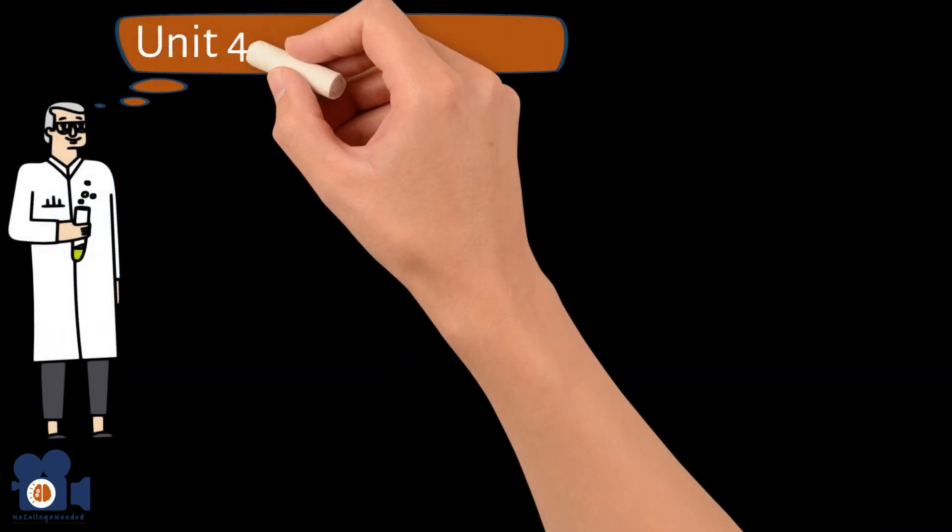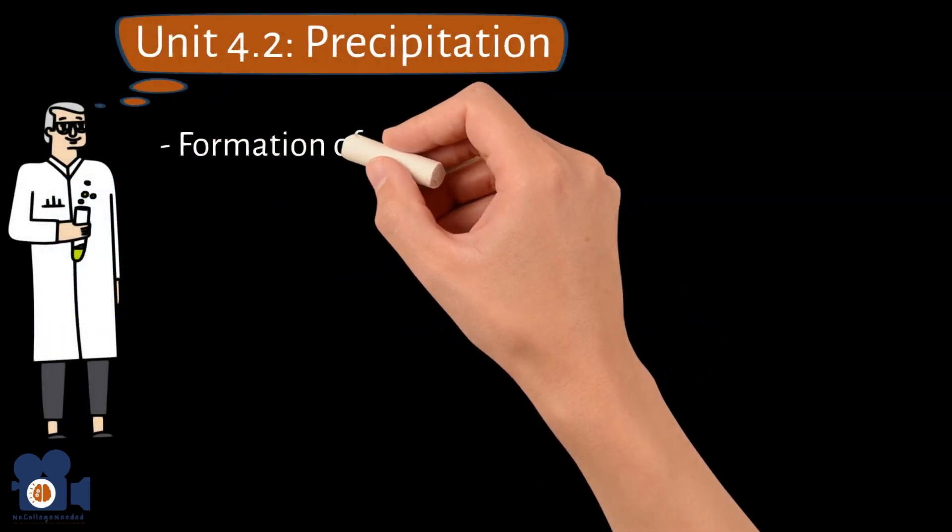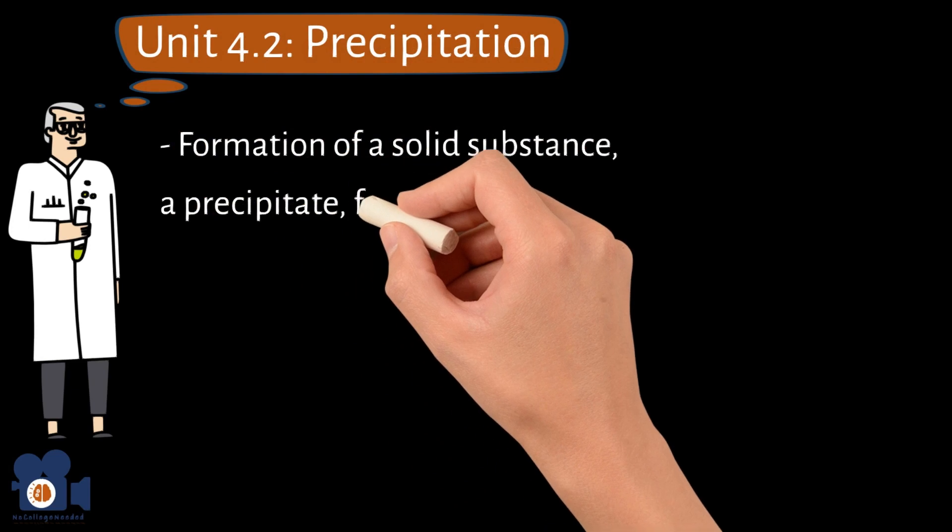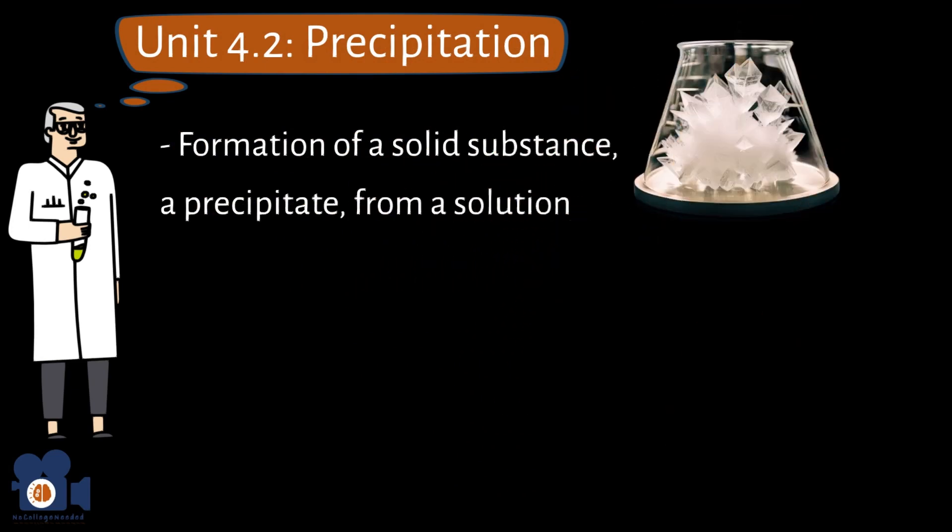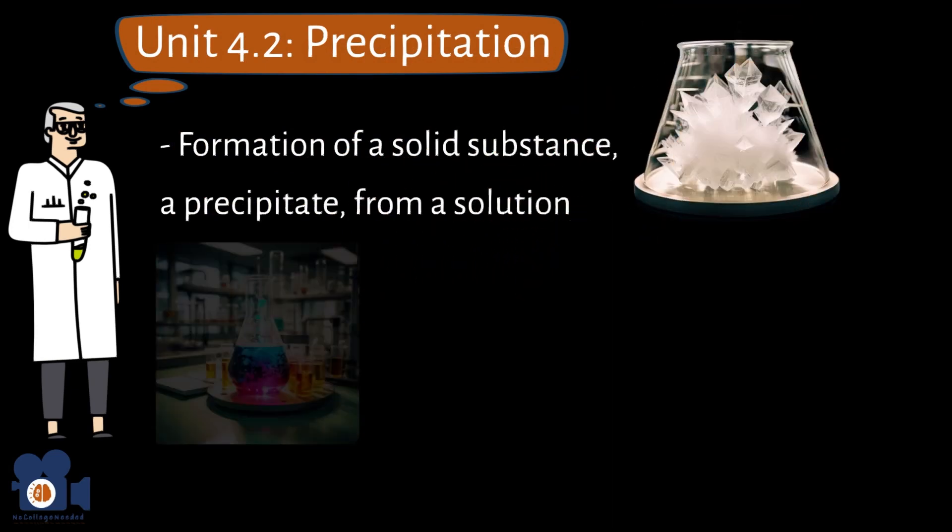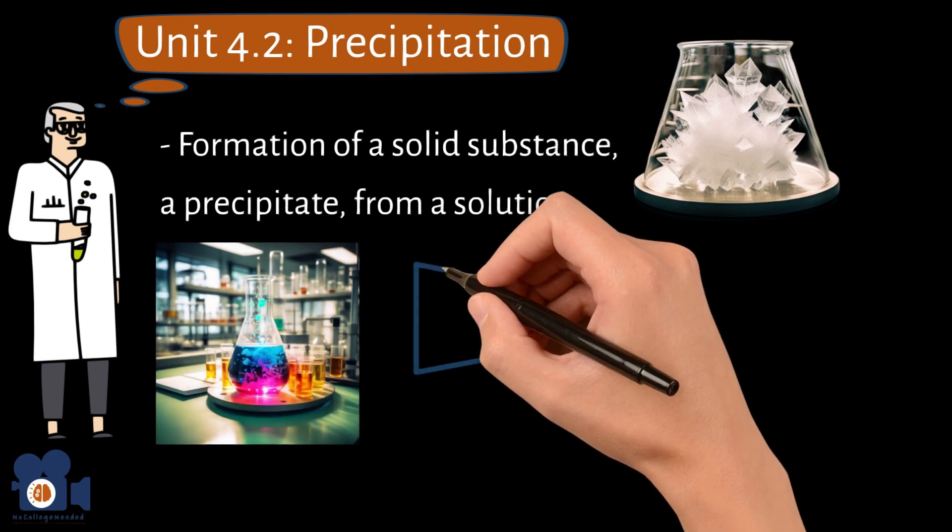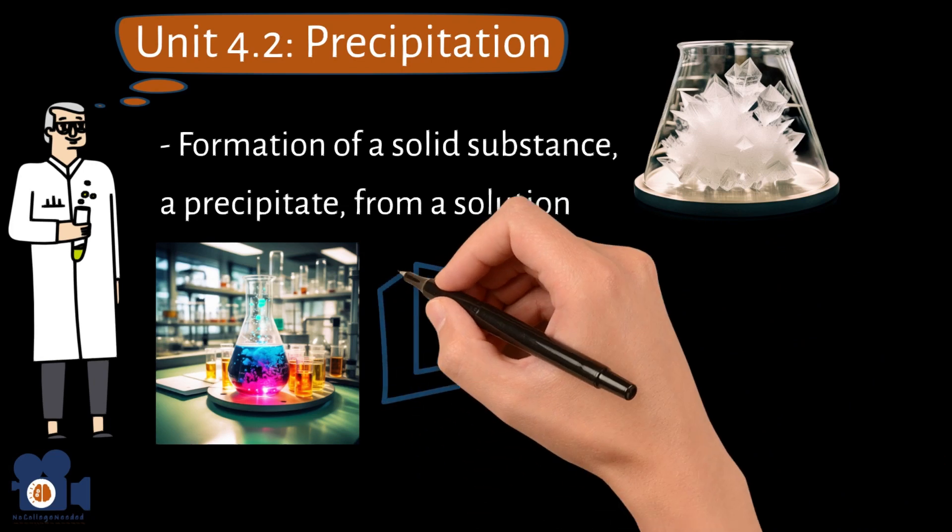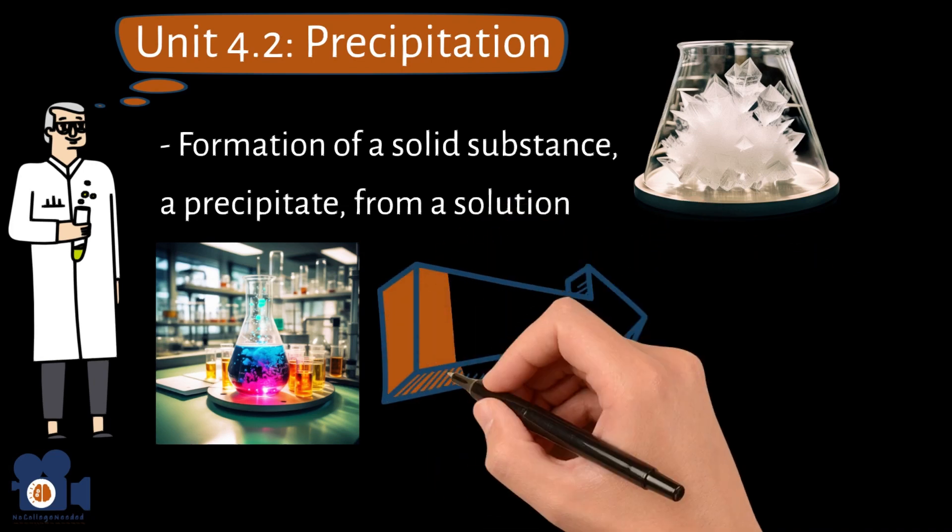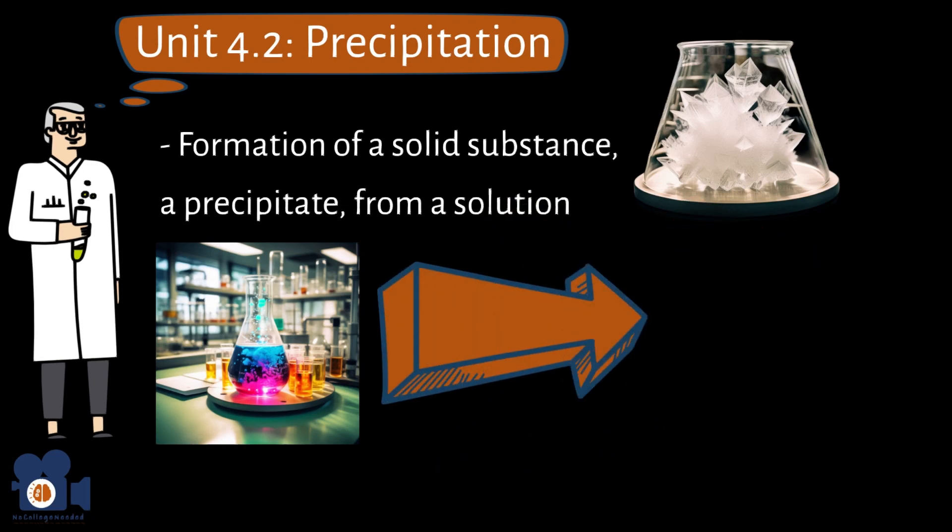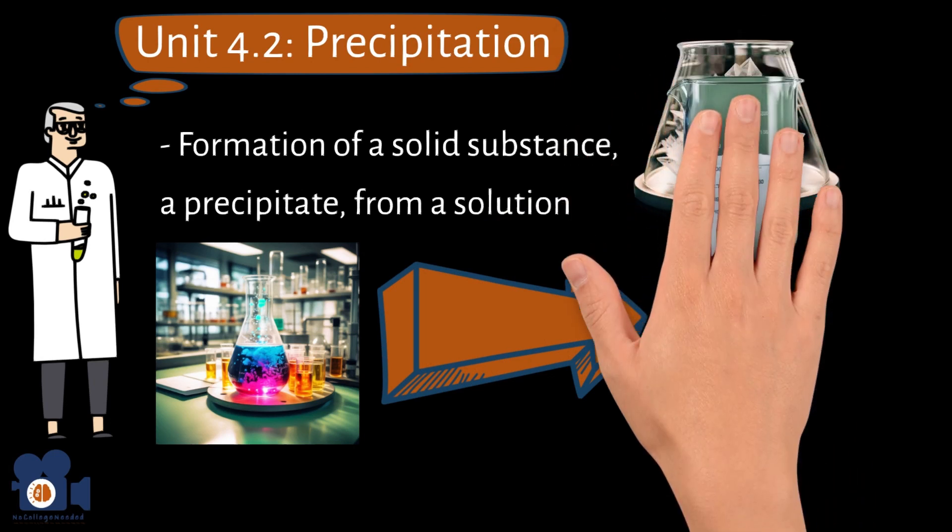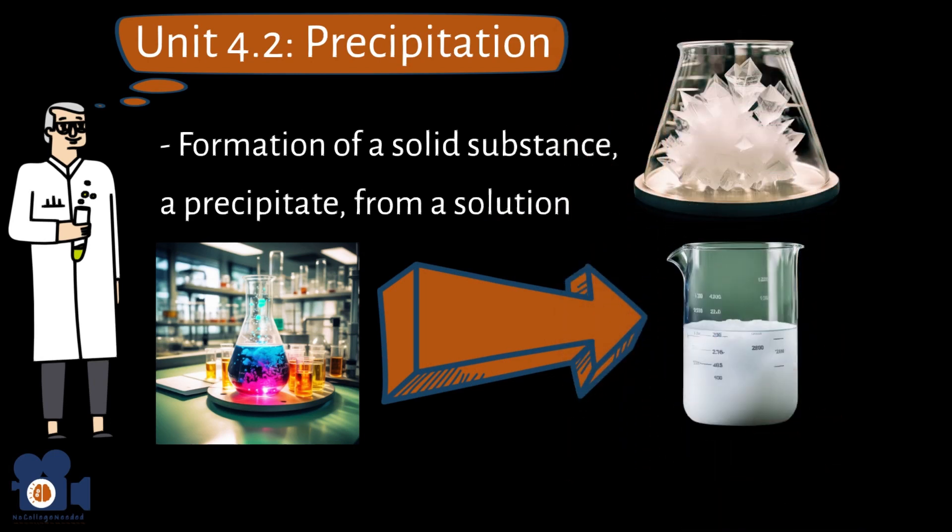As a reminder, precipitation refers to the formation of a solid substance, a precipitate, from a solution. The formation of a precipitate typically involves a chemical reaction between two or more aqueous, meaning dissolved in water, solutions. When the reaction leads to the production of an insoluble compound, it can no longer remain dissolved in the solution and forms visible solid particles, causing the solution to appear cloudy or exhibit visible particles.